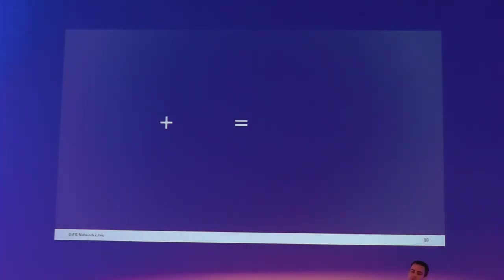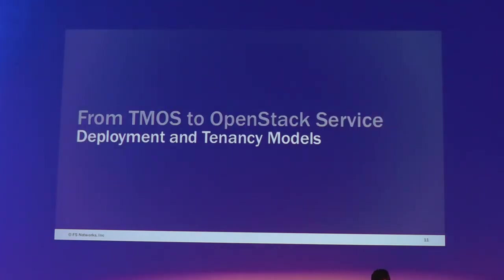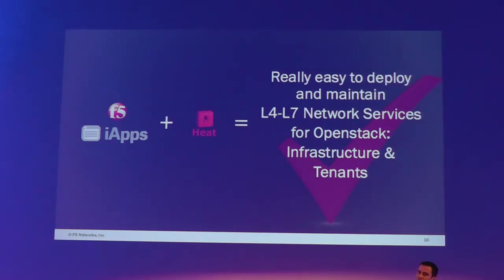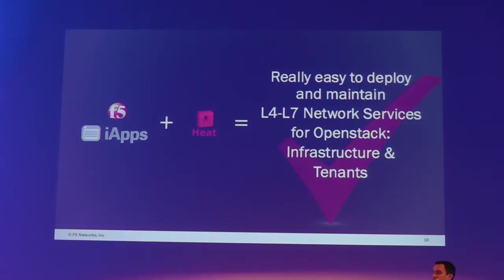The main point is that orchestration with F5 is very simple. We have F5 iApps and we have HEAT with our HEAT plugin. With those two together, you get really easy-to-deploy and easy-to-maintain layer 4 to layer 7 network services for OpenStack infrastructure and tenants. One thing I forgot to mention about iApps is that they allow re-entry — once you have deployed your application configuration on an F5 device, you can run through the iApp template again to change configuration settings as needed. iApps also keep your configurations consistent because they are templatized, repeatable, and tested by F5 or your own DevOps teams.